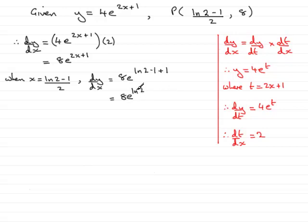Now if you have e to the natural log of a value, in this case 2, then you should know that this comes to the value 2.